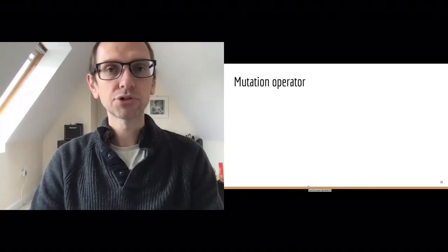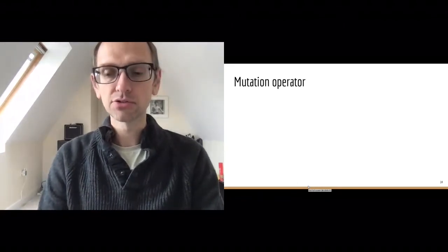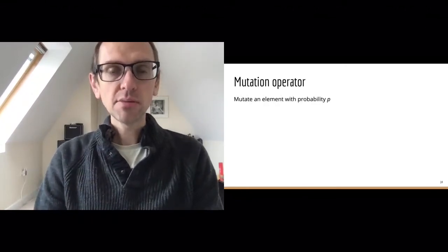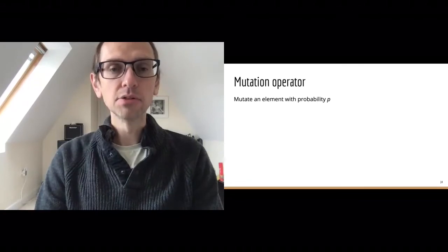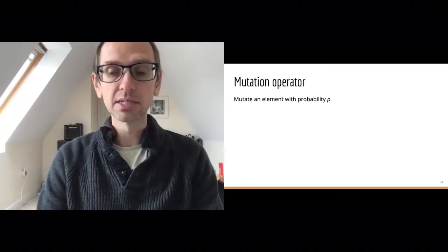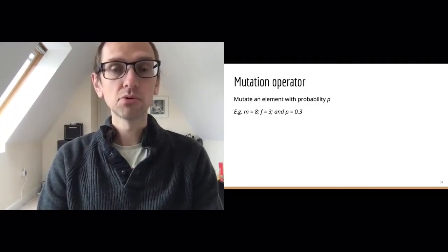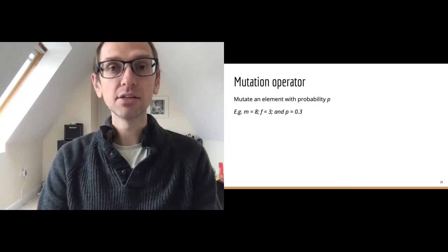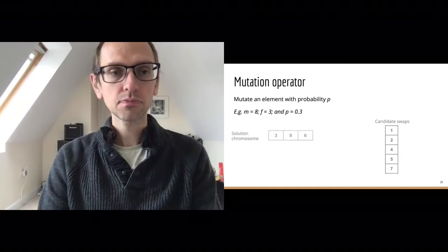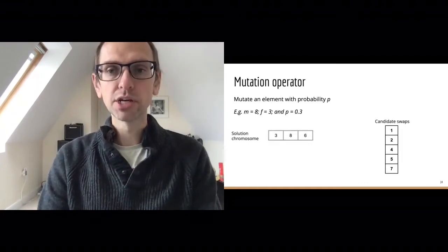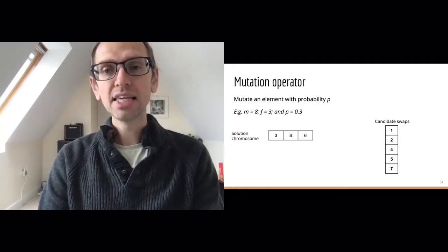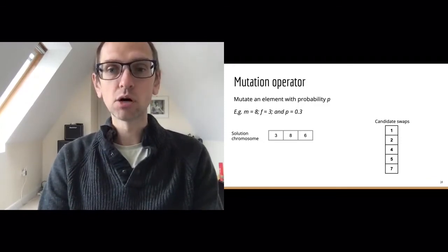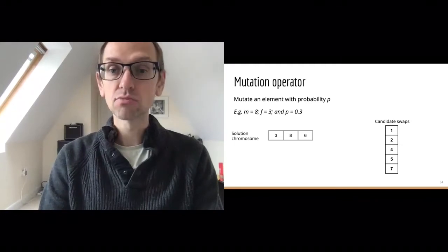Let's take a closer look at how to create a mutant in an evolutionary strategy. A simple method is to mutate an element with a user-specified probability P. Assume we have eight candidate locations and three facilities to place, and we've set P to an arbitrary value of 0.3. Here is our solution chromosome: 3, 8, and 6. That leaves five candidate swaps: 1, 2, 4, 5, and 7 — the solution space of candidate locations is just 1 to 8.